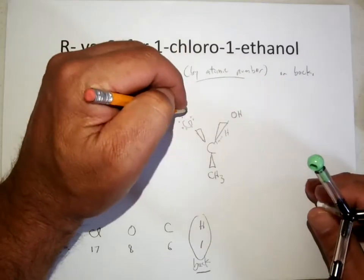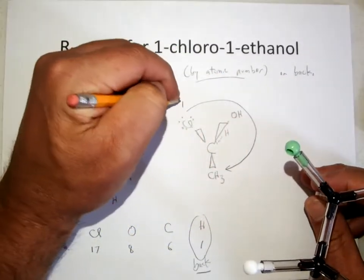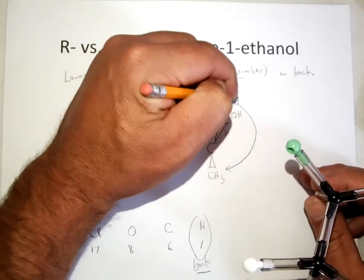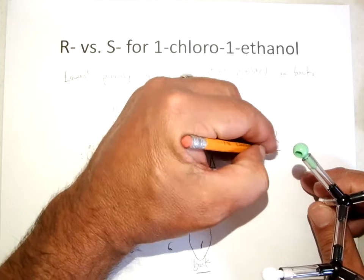And relative to the center, you can see that we're moving clockwise. So clockwise, chlorine to OH to methyl like this, priority group 1, 2, and 3, clockwise, that means it's the R isomer.